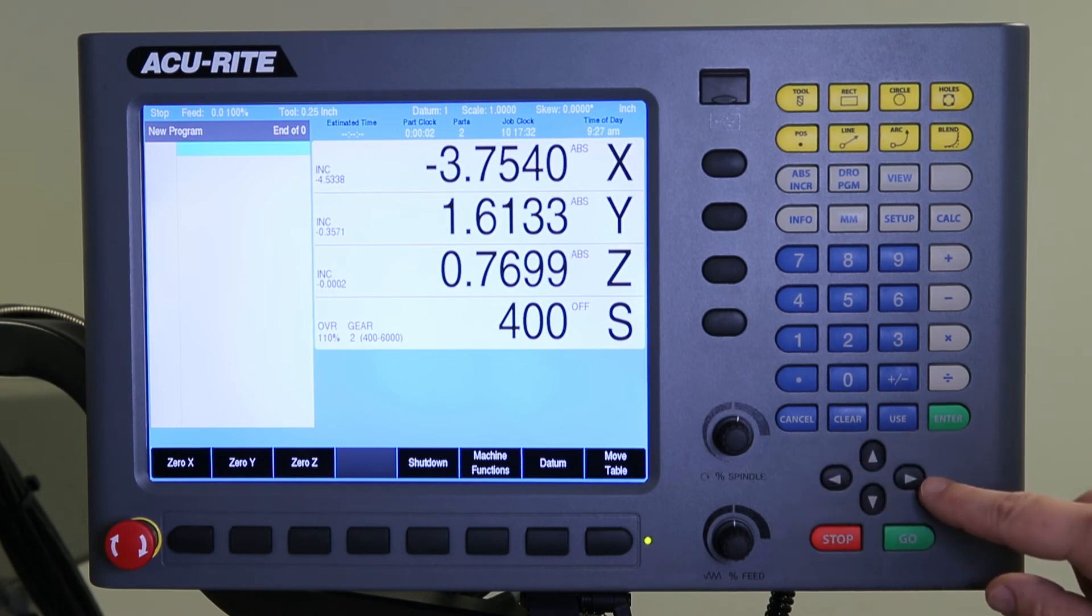These navigation keys here are arrows to move the table around or jog the table around. They can also navigate you through a form that you have open and then your stop and go keys.